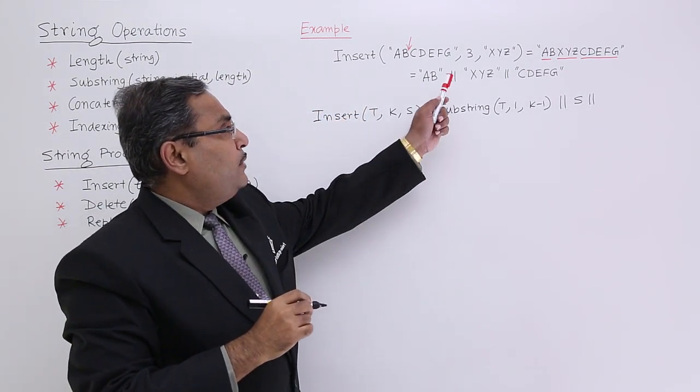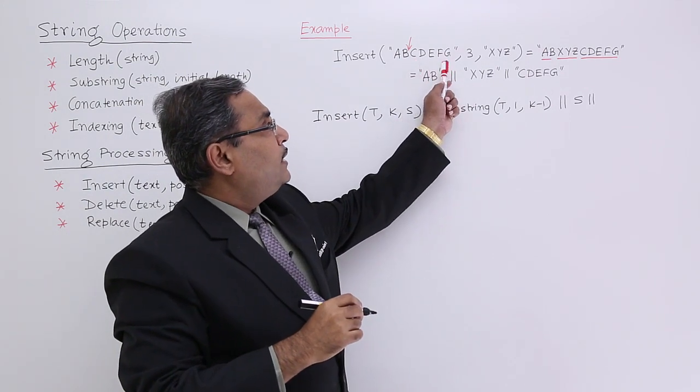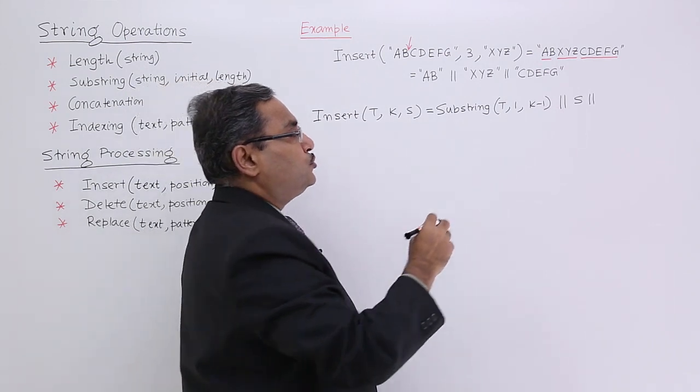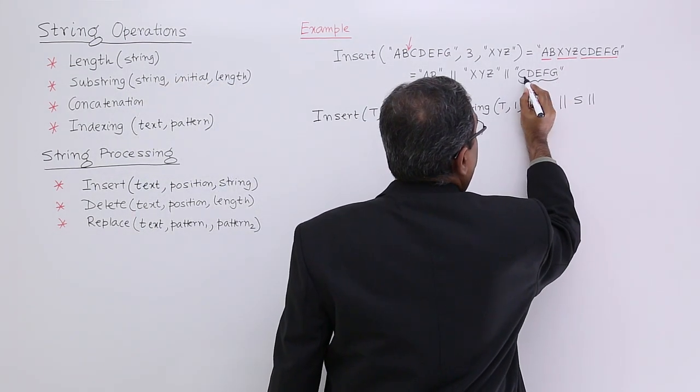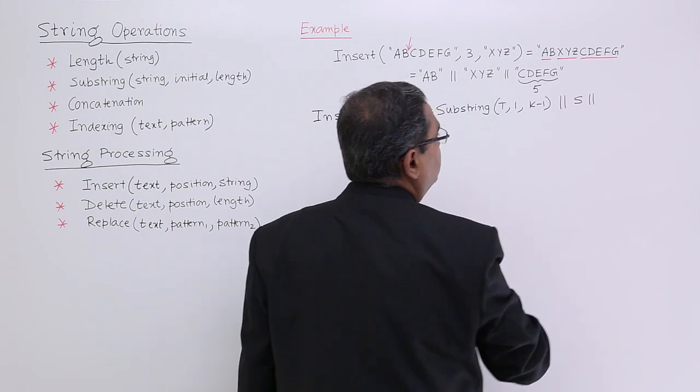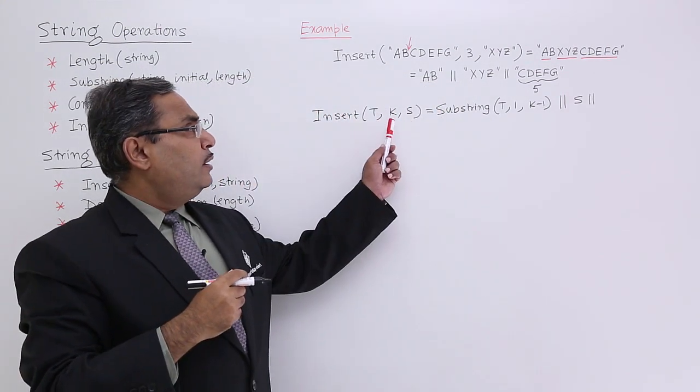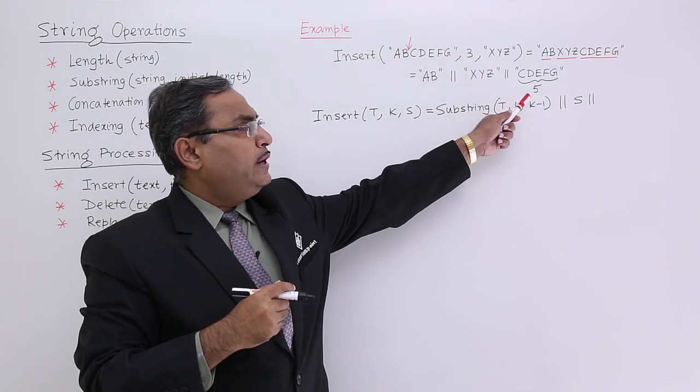Now I am remaining with the last part. What is the last part? That is CDEFG. How many number of characters here? We are having here 5 characters. How to get 5? Here I am getting 3, then how to get 5?